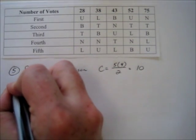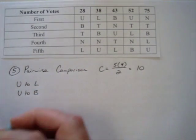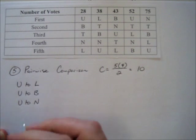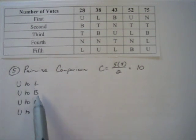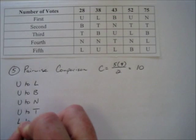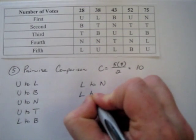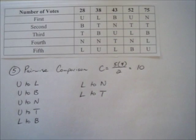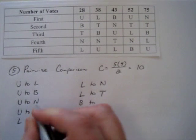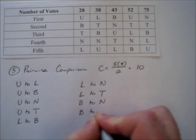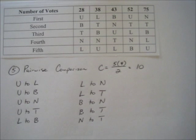The 10 comparisons are: Usher vs. Lifehouse, Usher vs. Blue Cantrell, Usher vs. Nelly, Usher vs. Train — covering all of Usher's matchups. Then Lifehouse vs. Blue Cantrell, Lifehouse vs. Nelly, Lifehouse vs. Train. Then Blue vs. Nelly, Blue vs. Train. And finally Nelly vs. Train.